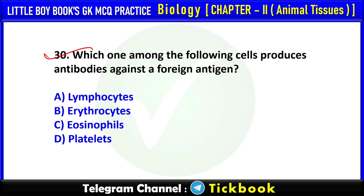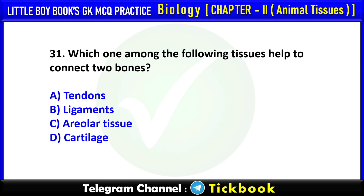Q30. Which one of the following cells produced antibodies against a foreign antigen? Option number A: Lymphocytes.